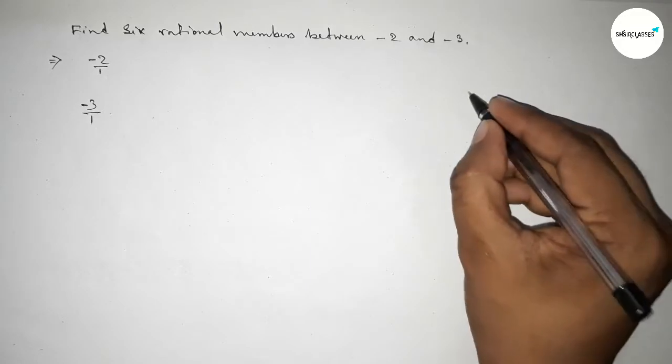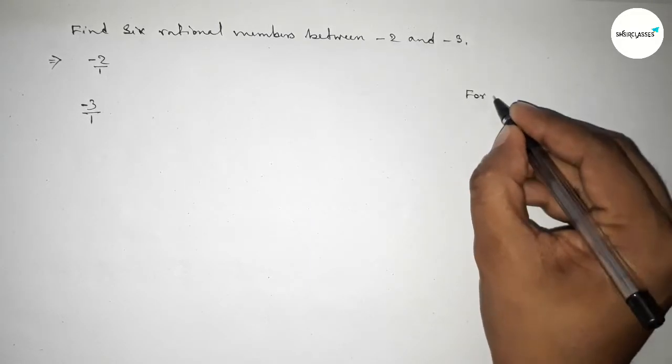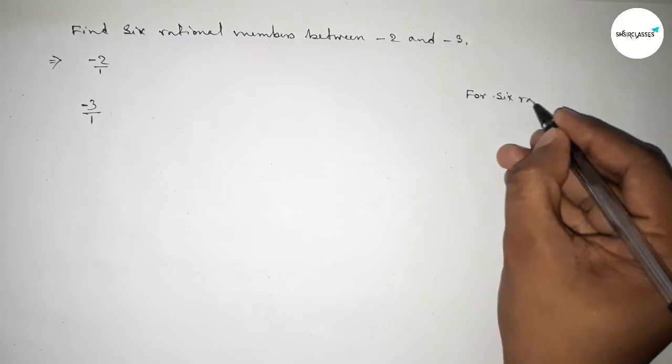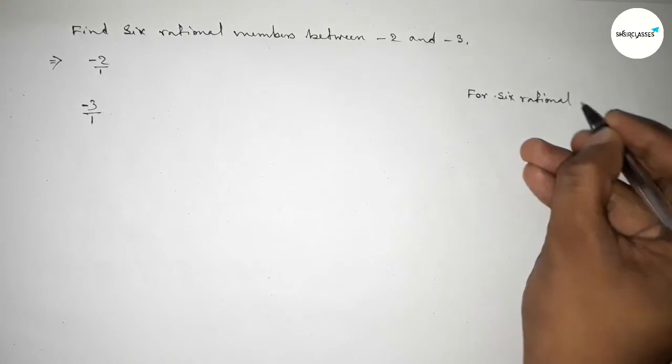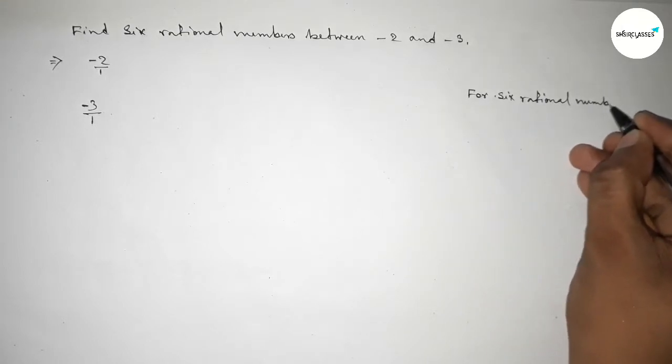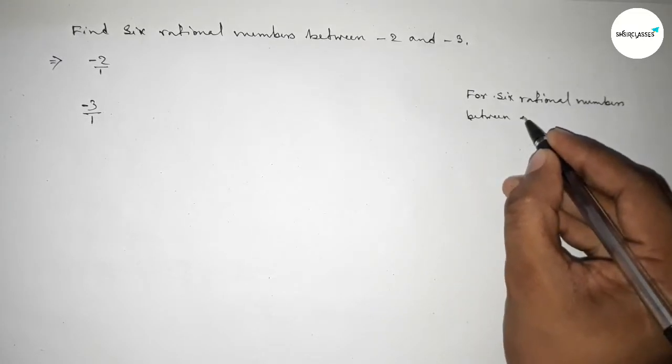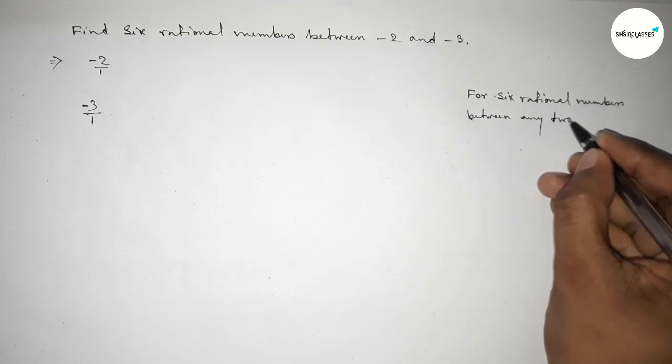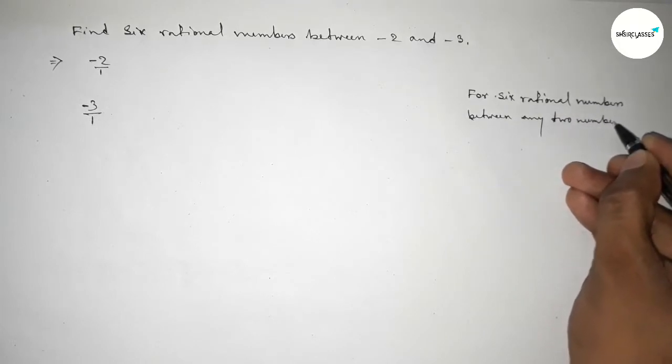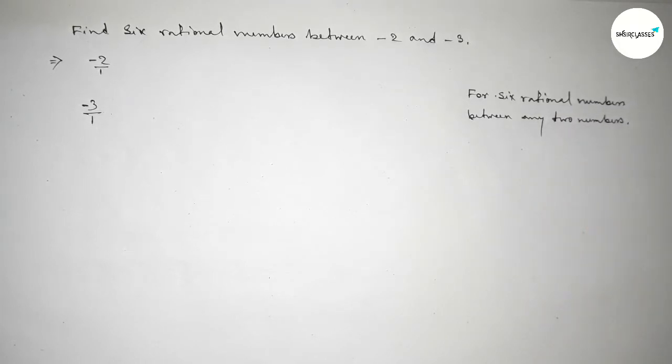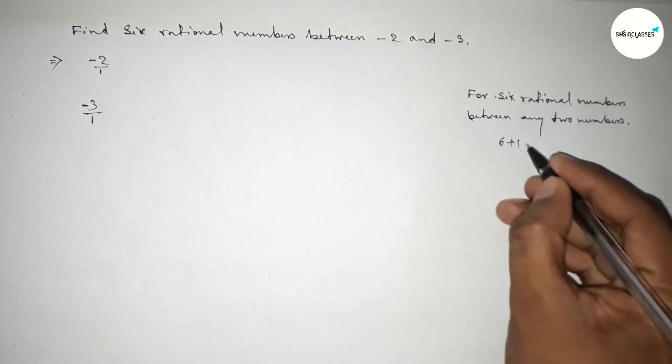Now roughly discussing here an important method. For finding six rational numbers between any two numbers, we have to follow this method. So here the method is we have to multiply both numbers by 6 plus 1 equal to 7.